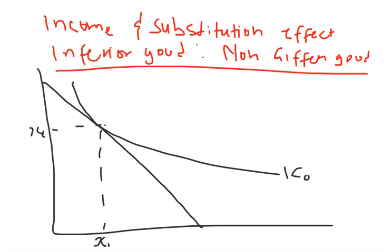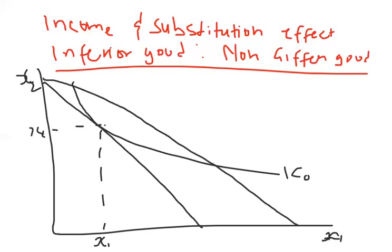This side is x2. Let's say there's a fall in price of commodity x1. If there's a fall in price of commodity x1, the budget constraint pivots or rotates outward, and as a result of that the optimum moves to a new point — let's say we move to this point here.